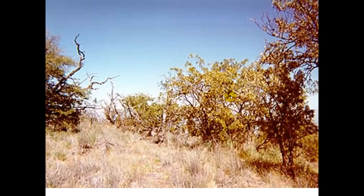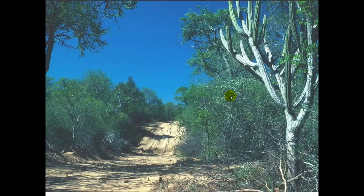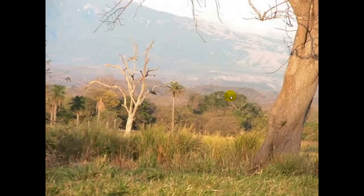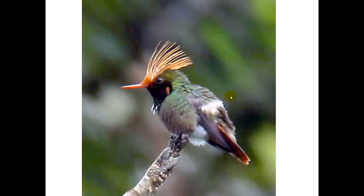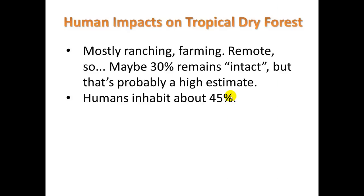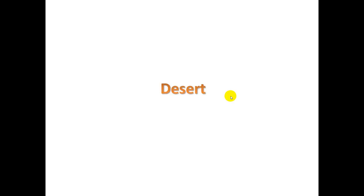Here are some pictures showing the biodiversity. We have a lot of ranching and farming going on here, and humans inhabit about 45% of this biome — India being the second most populated country.